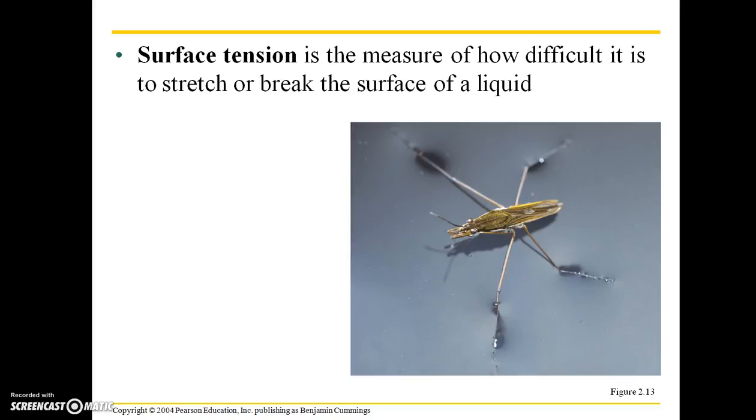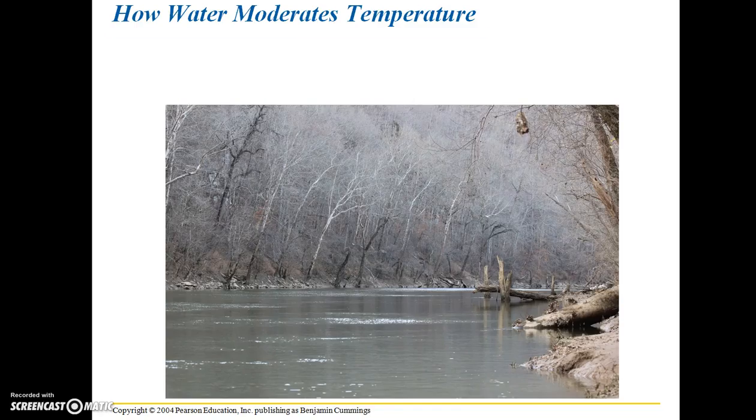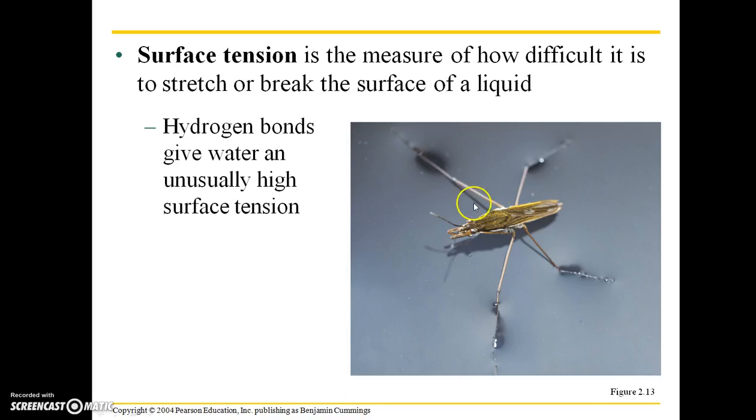Surface tension is the measure of how difficult it is to stretch or break the surface of a liquid, and hydrogen bonds are what give water an unusually high surface tension, which is taken advantage of by these bugs called water striders. They are predatory bugs, so they'll take smaller insects and other true bugs from the surface of the water, and they basically are able to just glide across that surface of water.